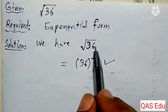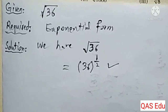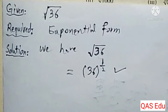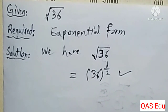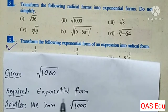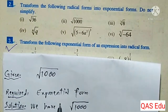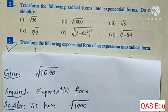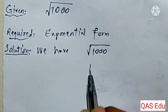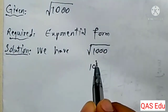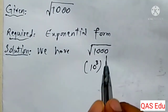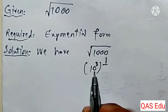Now the exponential form: the square root of 36 is written as 36 to the power 1 over 2. Next, 1000 under the root — we are required to convert it to exponential form. 1000 equals 10 to the power 3, and then we apply the root.